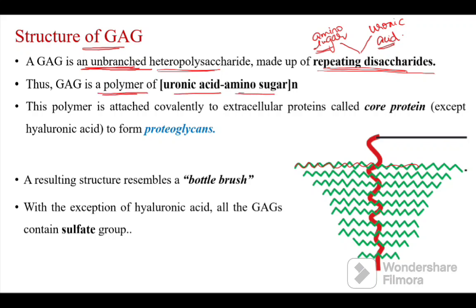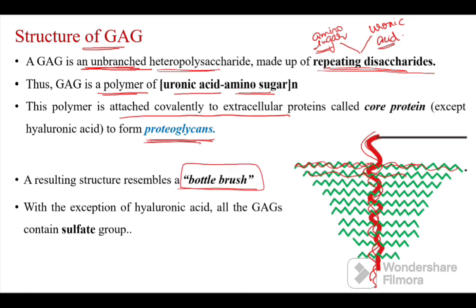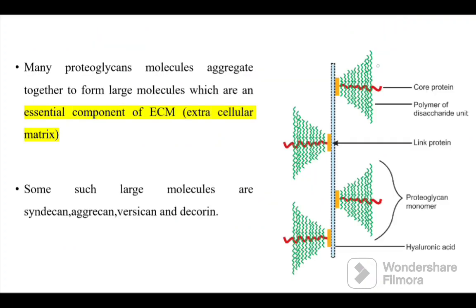This polymer is covalently attached to an extracellular core protein — except for hyaluronic acid — which is why they are also called proteoglycans. The repeating disaccharide units are joined to a core protein, giving the structure a bottle brush appearance. With the exception of hyaluronic acid, all glycosaminoglycans contain a sulfate group.